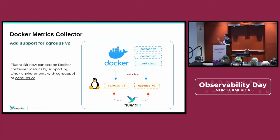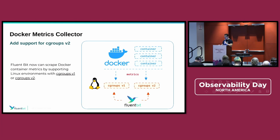So if you want to extract Docker container metrics today in a Linux box, you can use FluentBit and it will auto-handle everything — whether it's running Cgroups v1 or v2 behind the scenes.